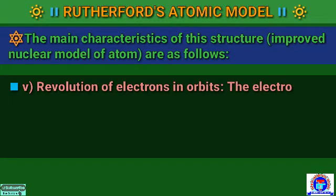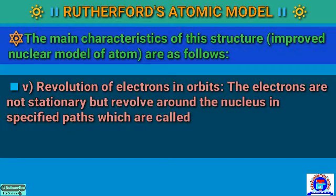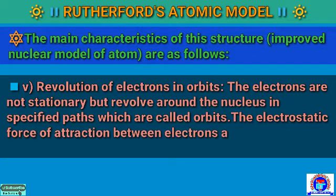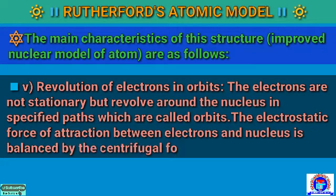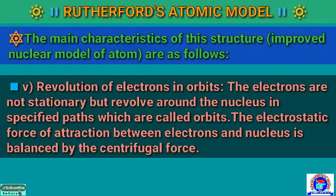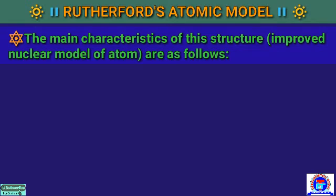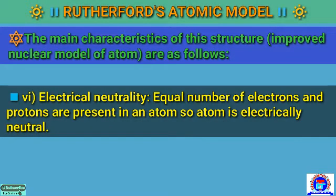Number 5: revolution of electron in orbit. The electrons are not stationary but revolve around the nucleus in specified paths which are called orbits — a two-dimensional path. The electron force of attraction between electrons and the nucleus is balanced by the centrifugal force. Number 6: electrical neutrality. Equal numbers of electrons and protons are present in an atom, so the atom is electrically neutral.